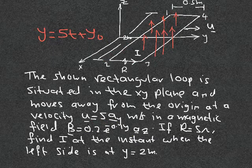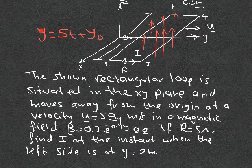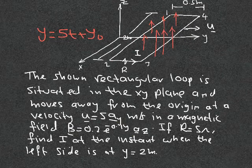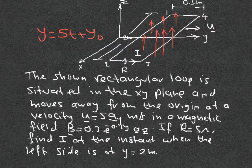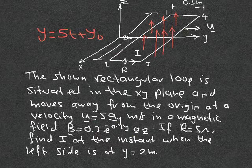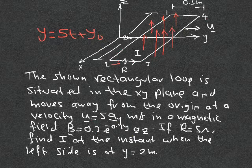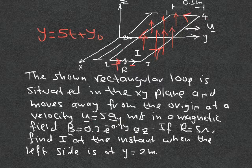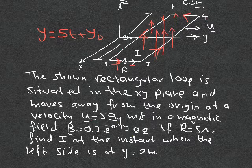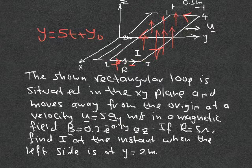y-naught is the location of the left edge at time zero, but we only need the rate dy/dt. To solve: we integrate B to get psi as a function of y, then differentiate with respect to t using the chain rule. Because of the direction assumed for integration — the normal is in the z direction — this sets the reference polarity. A positive current means current flows from left to right.